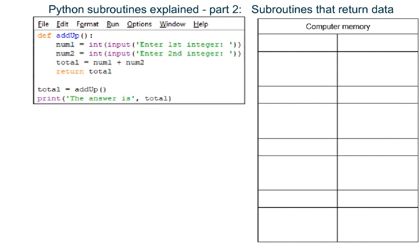This improved version of the program solves the problem because we have added an extra line of code at the end of the subroutine, and the line of code where we call the subroutine has changed. It now starts by making a variable to store something in.